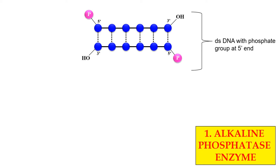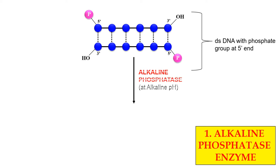Here is a DNA molecule which has the phosphate group at both ends. What the Alkaline Phosphatase does is it removes the phosphate group from the 5' end.